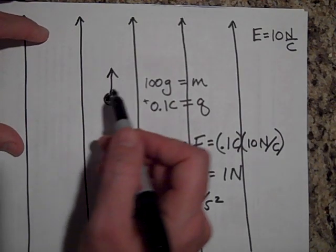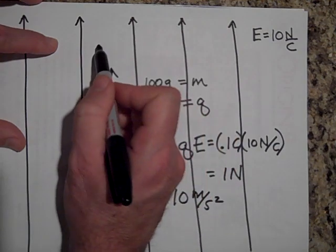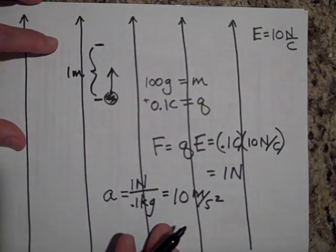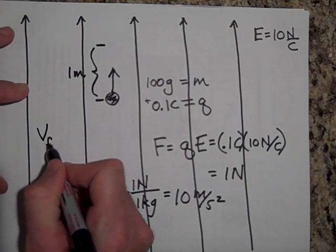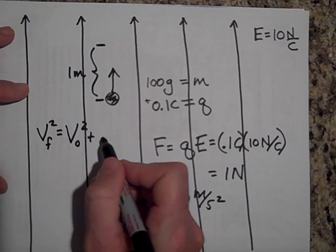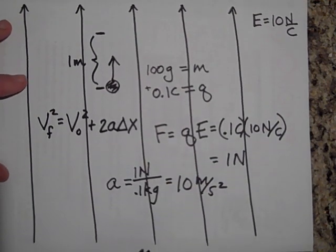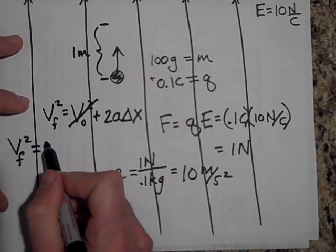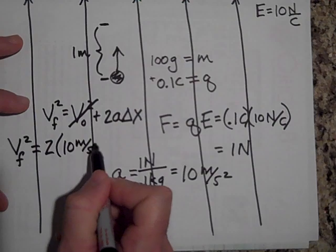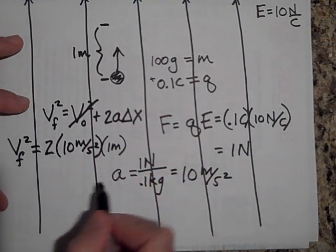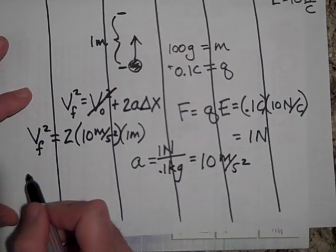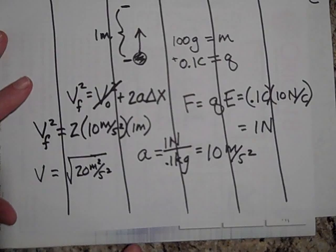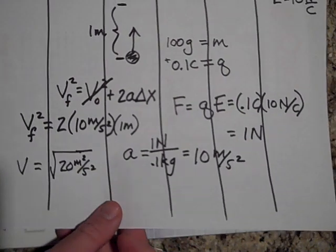If you wanted to know how fast it would be going one meter after you released it from rest, if that were 1 meter, then all you do is you'd say V final squared equals V initial squared plus 2A delta x. And V initial squared is 0. So V final will equal 2 times 10 meters per second squared times 1 meter. So that gives me 20, so the square root of 20. So V final will equal the square root of 20 meters squared over second squared. Whatever that is, 4 point something or other.